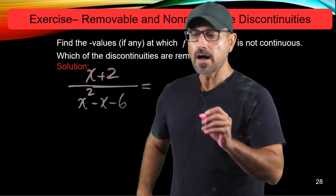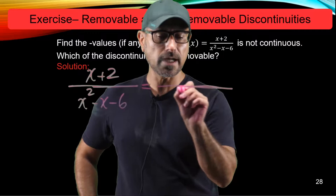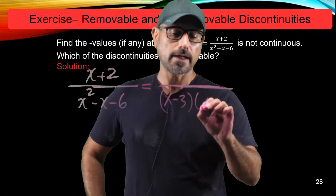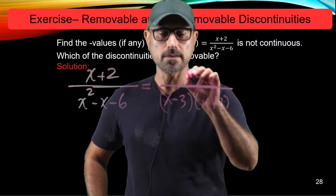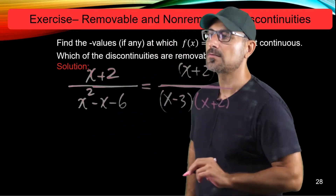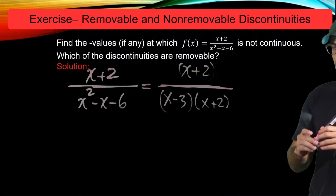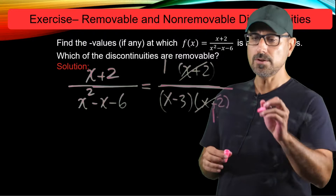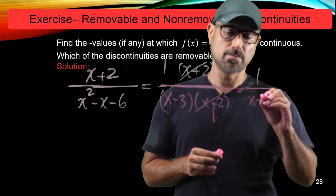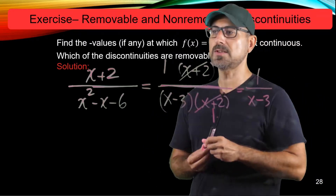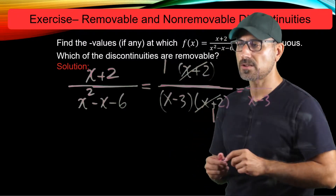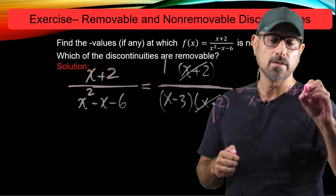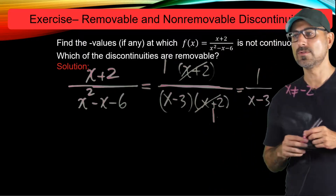We investigate if there is a common factor between the top and the bottom. Using the factorization from before, the denominator is (x minus 3)(x plus 2), and the top also contains (x plus 2) as a factor. Using the dividing-out technique, we get 1 over (x minus 3) as a simpler version of the rational function, valid whenever x is not equal to negative 2.